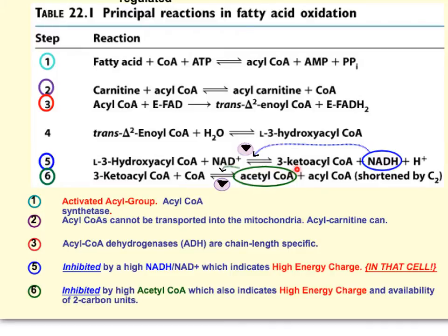Acetyl-CoA is only two carbons. So if we started with a 12-carbon fatty acid, you pull off two carbons to produce acetyl-CoA and are left with a 10-carbon acyl-CoA. It is shortened by two carbons each time it goes through the cycle. Every time it goes through, it produces an NADH, and step 5 is inhibited by high concentrations of NADH. Step 6 produces acetyl-CoA and is inhibited by high acetyl-CoA concentrations in that mitochondria.